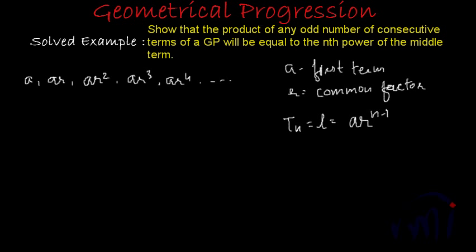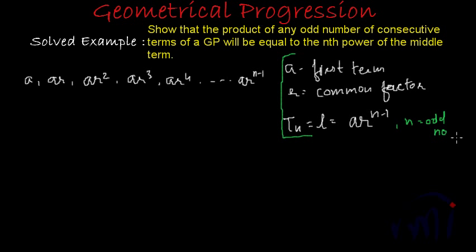We have to find the product of this pattern till the nth term, where the nth term is AR to the power n minus 1. We have to find the product where n is an odd number, and show that this product equals the nth power of the middle term.